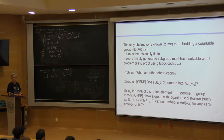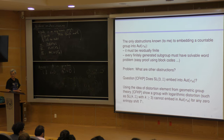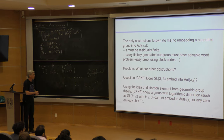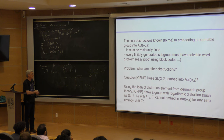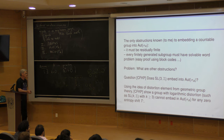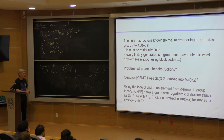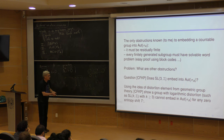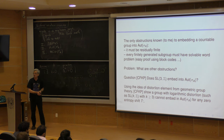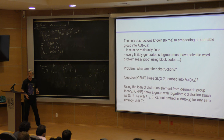Does SL_3(Z) embed into the automorphism group, or even the discrete Heisenberg group? Using the idea of distortion elements from geometric group theory, Sear, Franks, Kraa, and Pettit show — in a preprint on the archive — that a group with logarithmic distortion, such as SL_k(Z) with k ≥ 3, cannot embed in the automorphism group of T for any zero-entropy shift T. I don't know if it can embed in the automorphism group of sigma_A, but it can't embed in anything zero entropy.